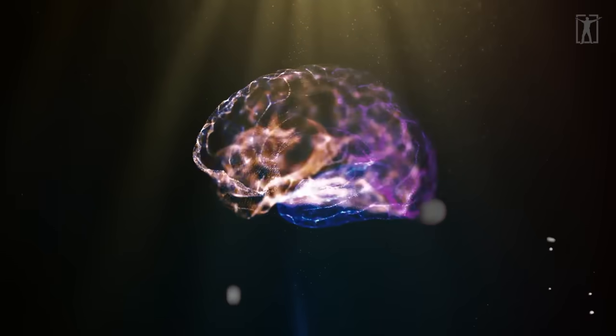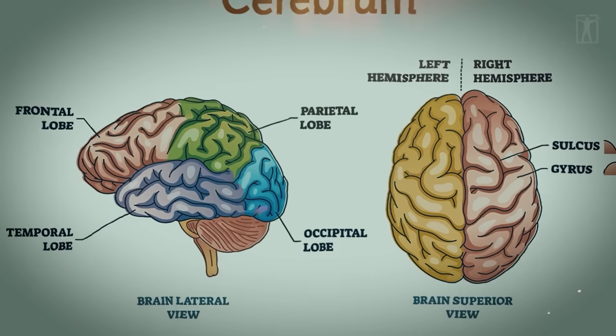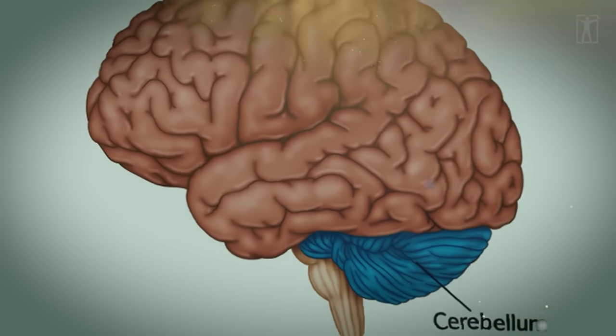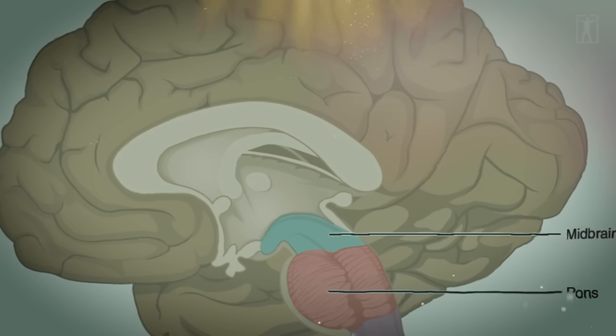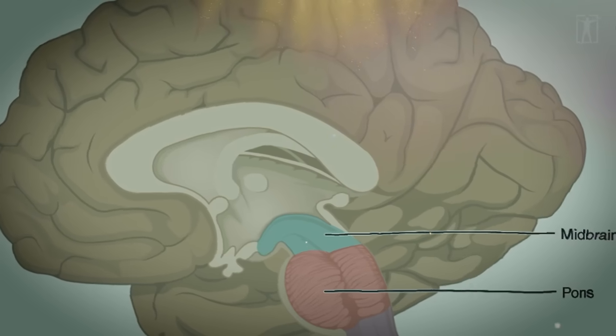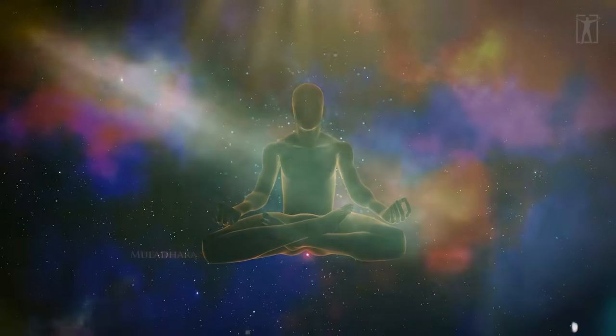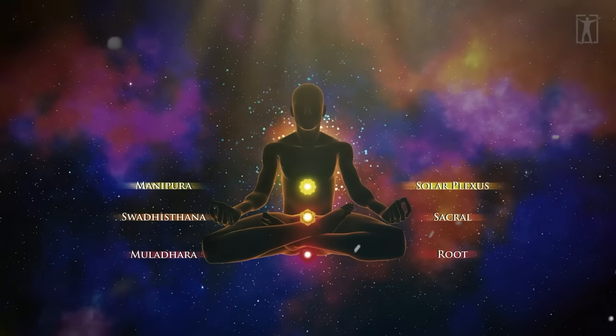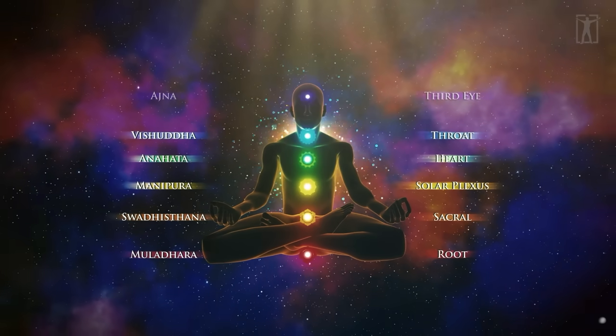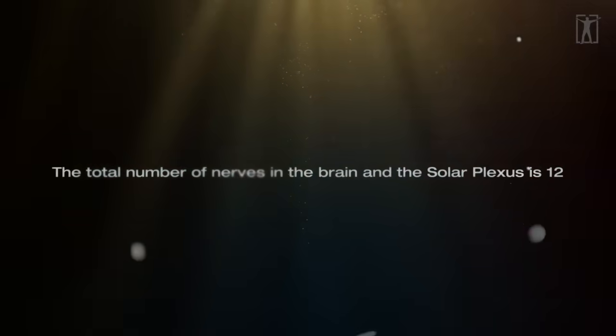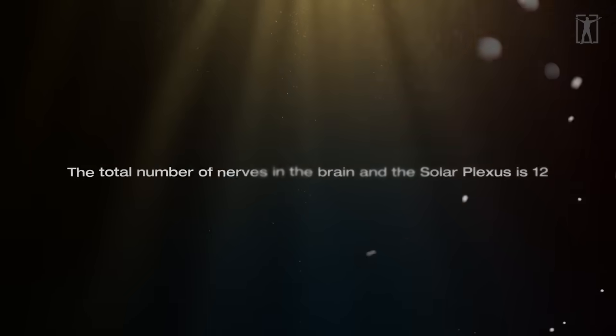We have four brains. The cerebrum is the brain of God. The cerebellum is the man-brain, linked to the lower mind. The medulla oblongata is the third brain in charge of involuntary actions such as breathing. The solar plexus is the fourth brain, and is associated with the lower mind, greed, animalistic behavior, and so on. The total number of nerves in the brain and the solar plexus is 12.